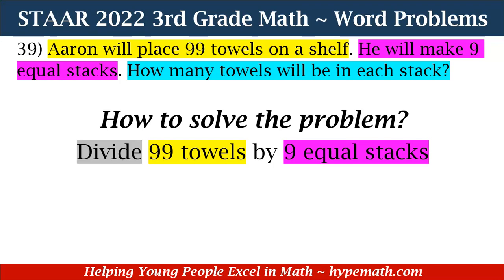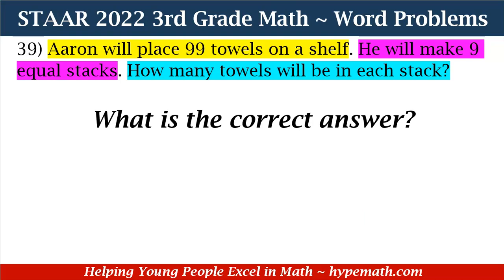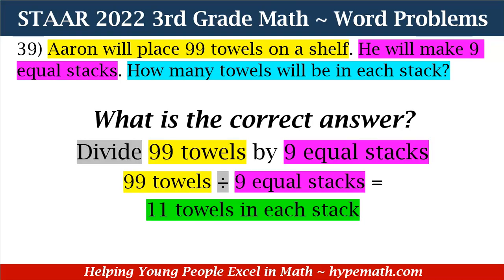99 divided by nine is equal to 11. So there are 11 tiles in each stack. And what is our correct answer? Yes, 11 tiles on each stack is our answer. Great job, third graders.